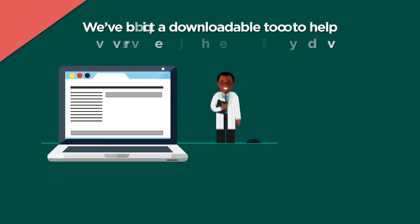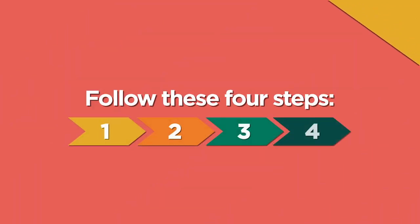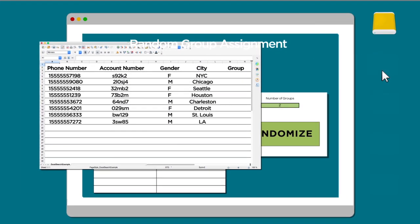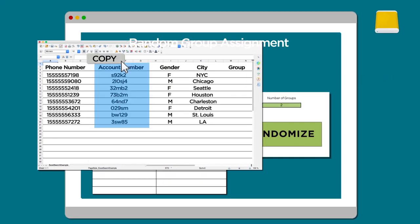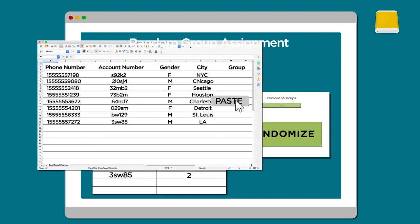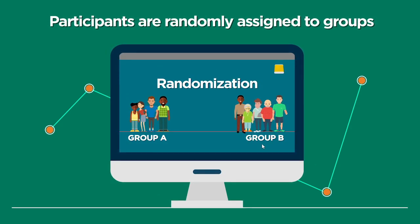To make it easy for you, we've built a downloadable tool to help randomize your data on your computer. Follow these four steps. Step 1: Download the randomization tool. Step 2: From your sample, copy any field that is a unique identifier for each participant into the spreadsheet. Step 3: Click randomize, and voila! The sheet has randomly assigned participants to A and B groups. Step 4: Copy the new groups back into your original dataset. And now your participants are randomly assigned to groups, and you can sit back and trust the results of your test.